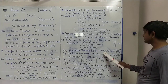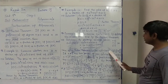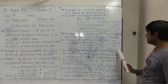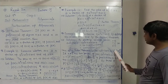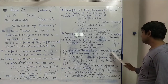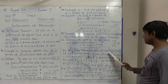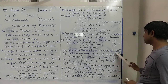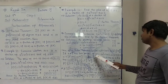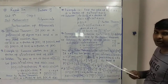Taking 6 as common: P(x) equals 6 times the bracket x squared plus 17 by 6 times x plus 5 by 6. Since this is a quadratic polynomial, it will have two zeros, alpha and beta. So 6x squared plus 17x plus 5 equals 6 times (x minus alpha)(x minus beta).